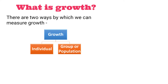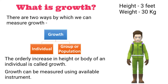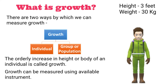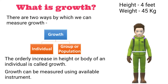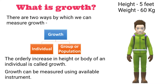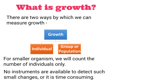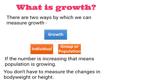There are two ways by which we can measure the growth of a living organism. The orderly increase in height or body weight of an individual is called growth, and this definition is applicable only for larger organisms because we can measure body weight and height using available instruments. But for smaller organisms, this definition is not applicable, as the increase in height or body weight is negligible and no instruments are available to detect it. For smaller organisms, our approach will be different — the increase in number over a certain period of time is called growth.